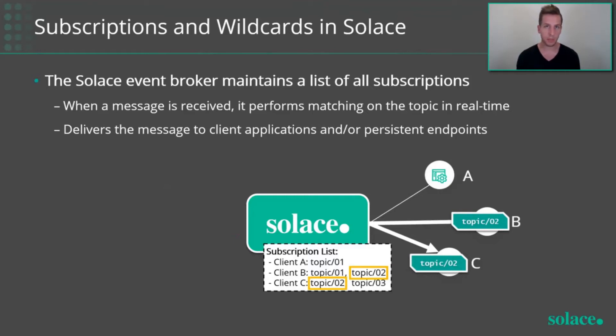Because of this, there is a strong order guarantee on topics in Solace. If two clients — two consumers — are subscribed to the same topics, they will receive messages in the exact same order, always.